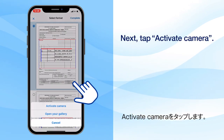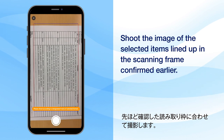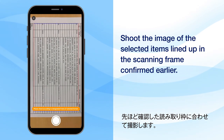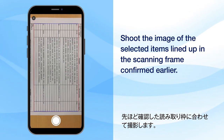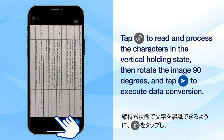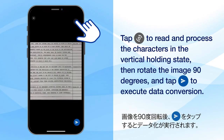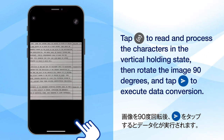Next, tap Activate Camera. Shoot the image of the selected items lined up in the scanning frame confirmed earlier. Tap the icon to read and process the characters in the vertical holding state, then rotate the image 90 degrees and tap the icon to execute data conversion.